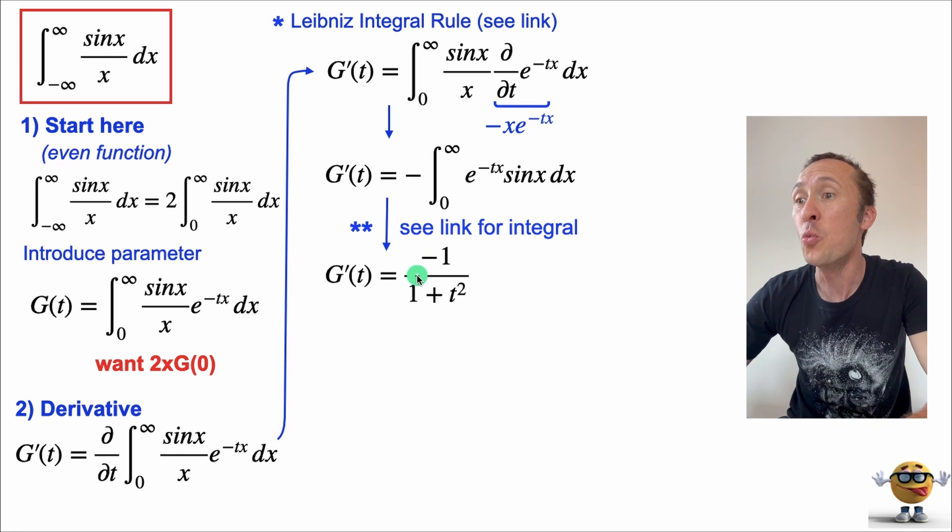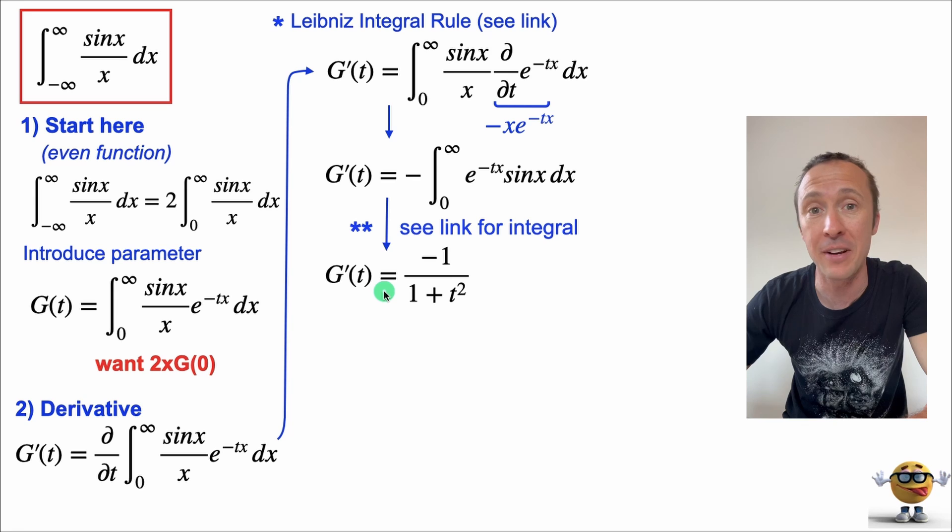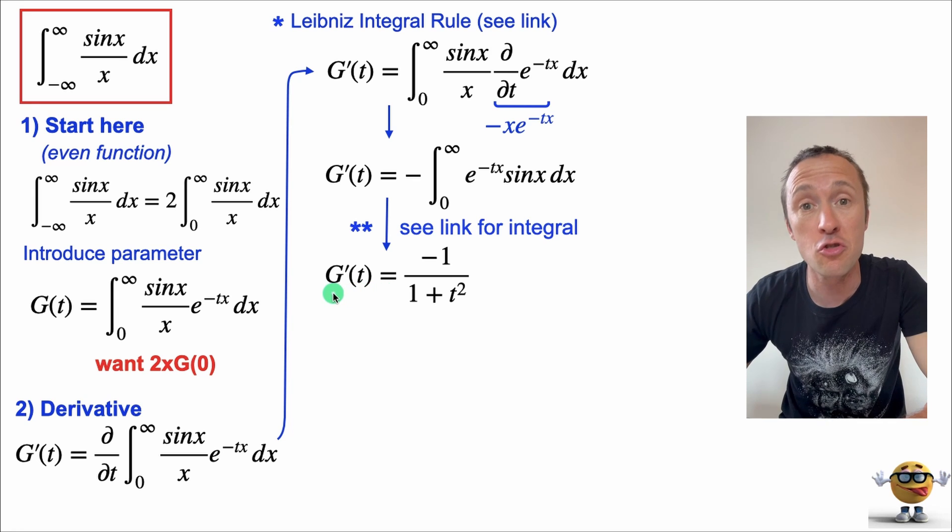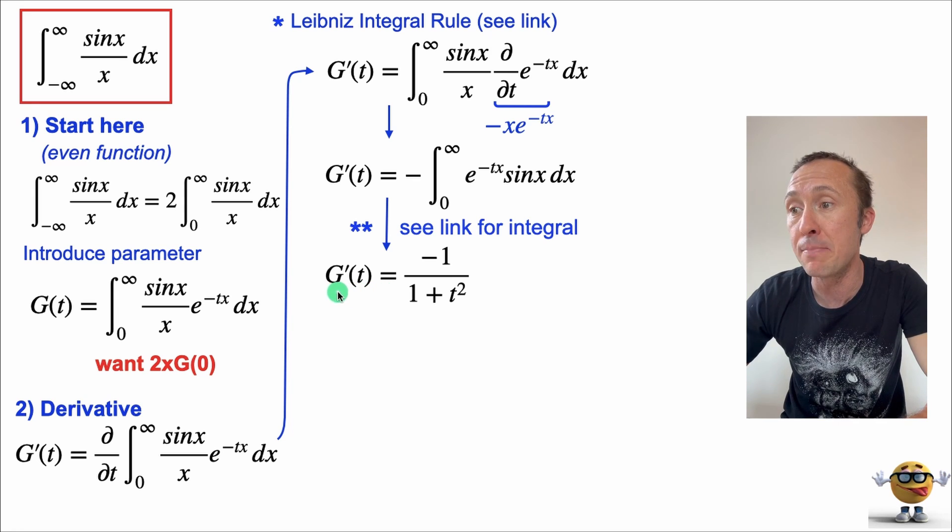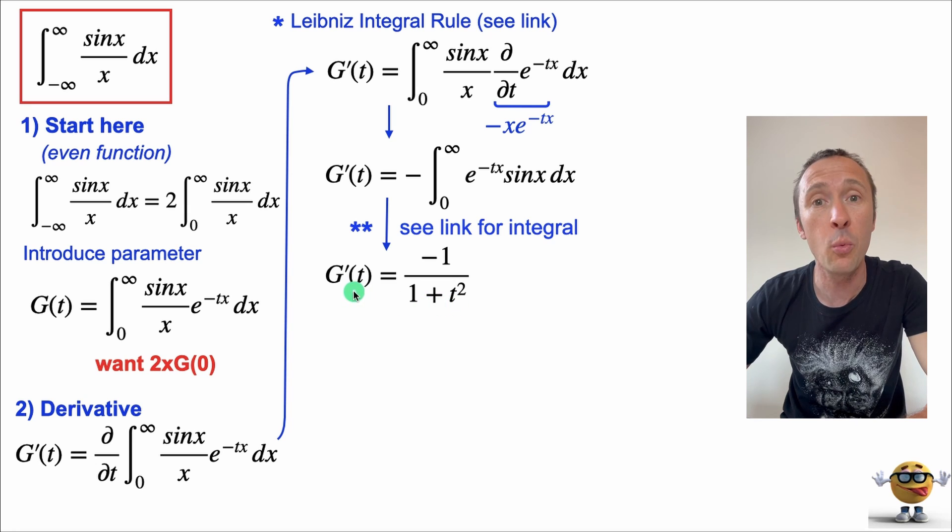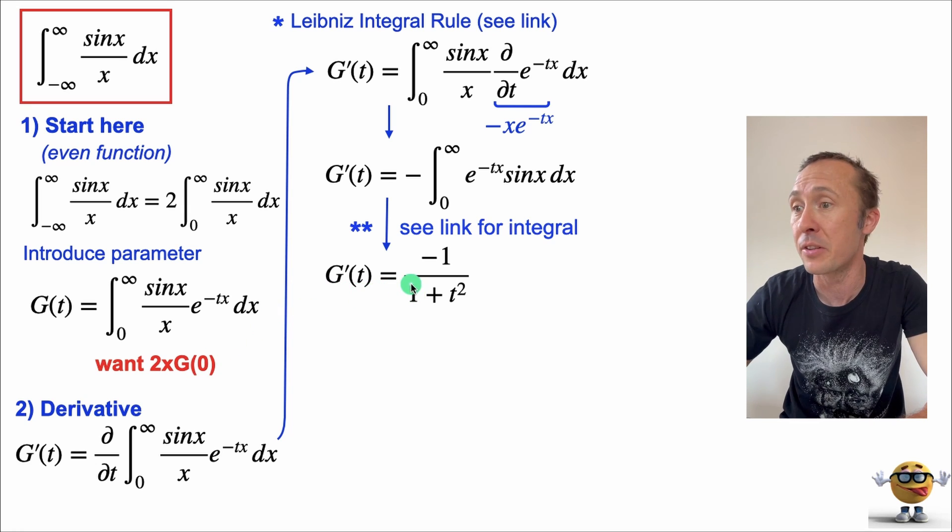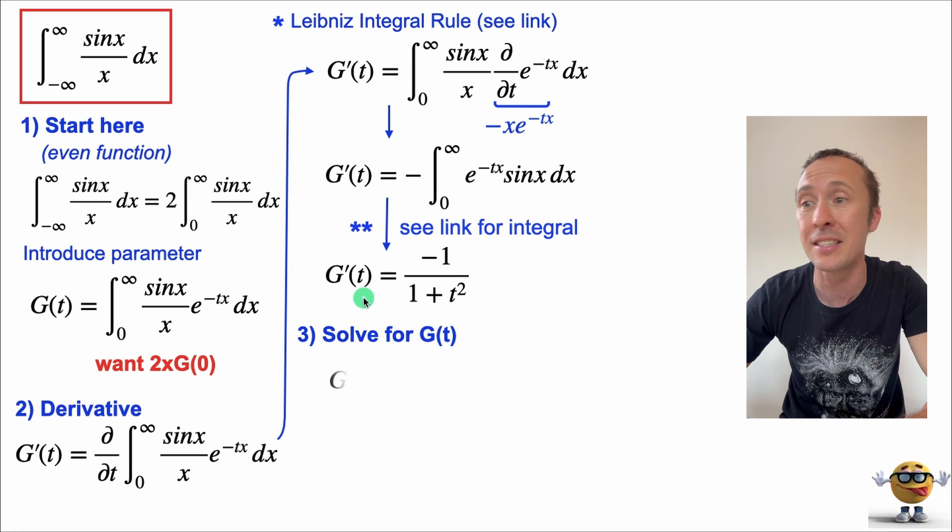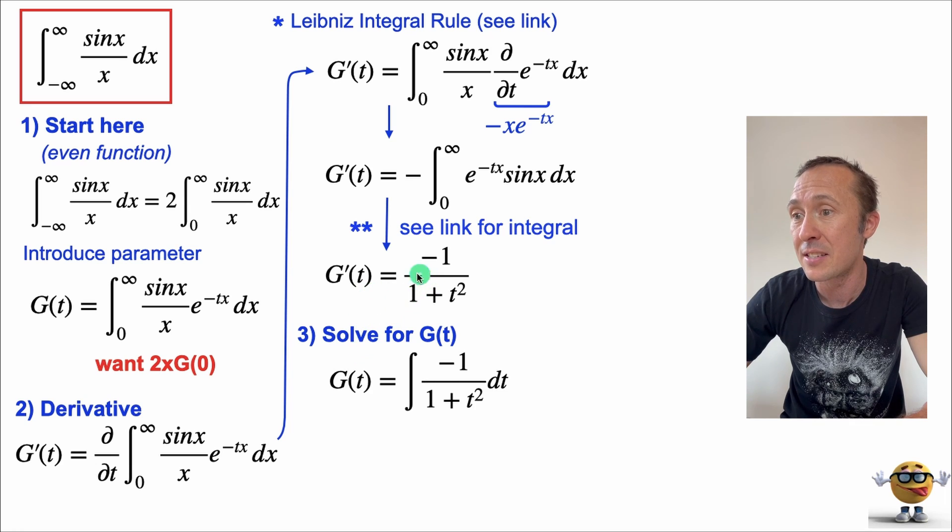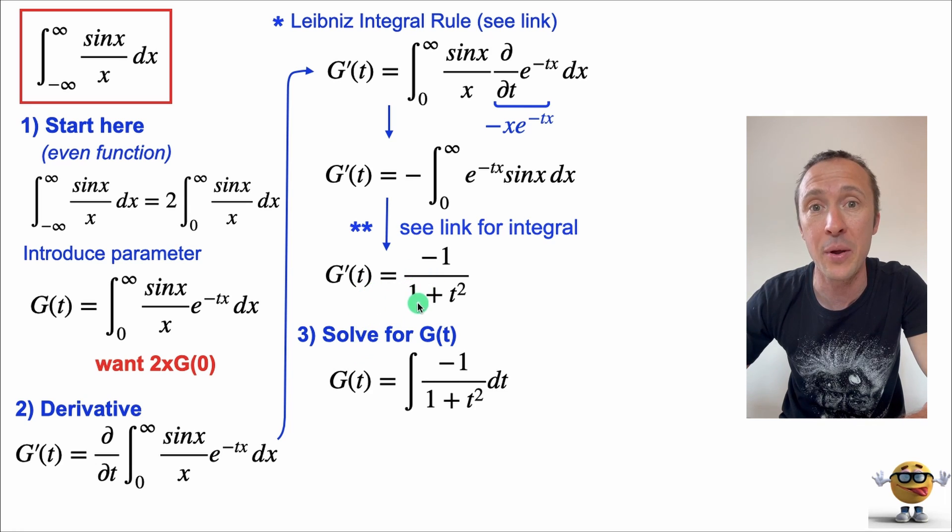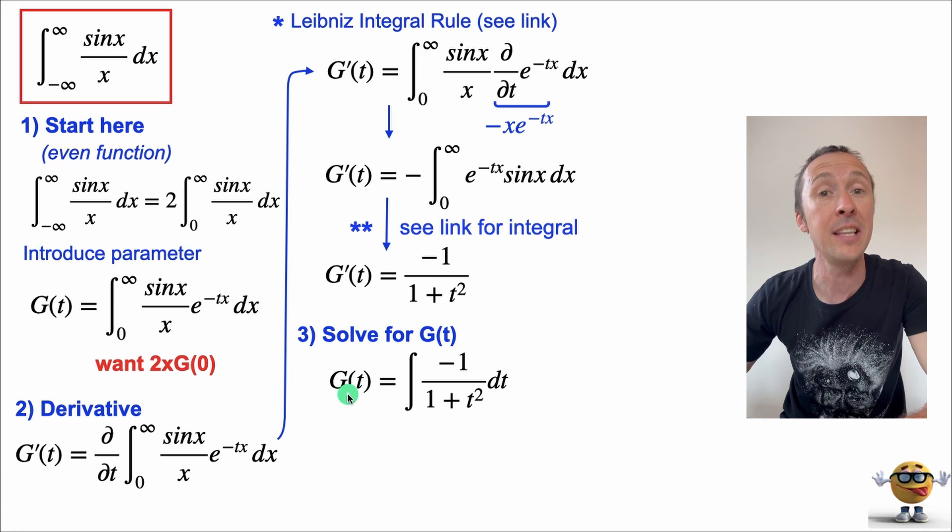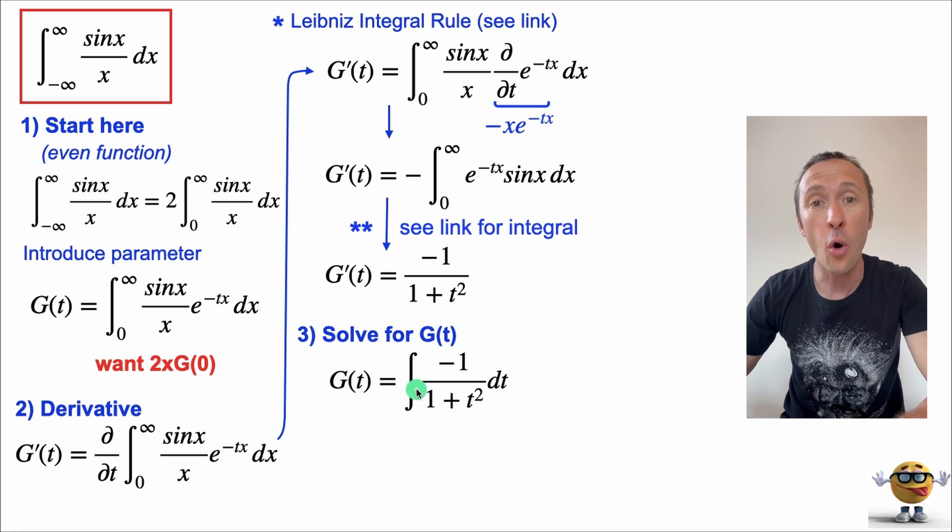Now, my friends, we have this function, right? We've evaluated the derivative of g. So we have g prime of t equals negative 1 over 1 plus t squared. We don't want g prime of t. We want g of t because we want to get to g of 0. So we are going to take the integral of this. This is the fundamental theorem of calculus that allows us to do that. The integral of this, negative 1 over 1 plus t squared, that's our g of t that we're hoping for.